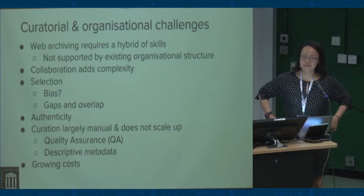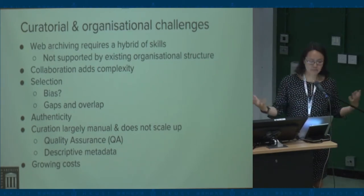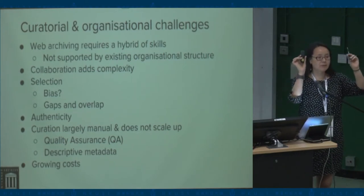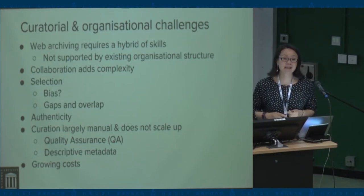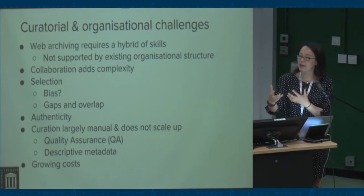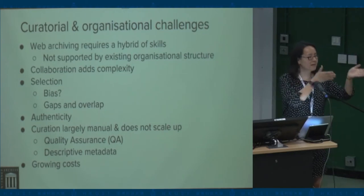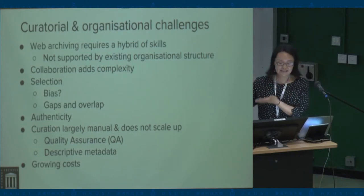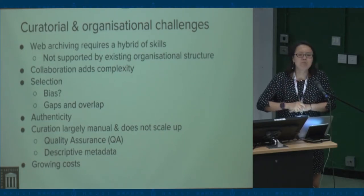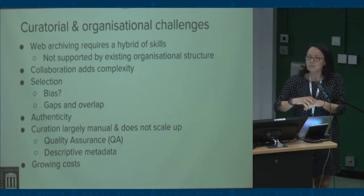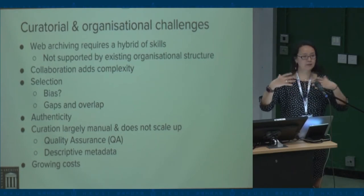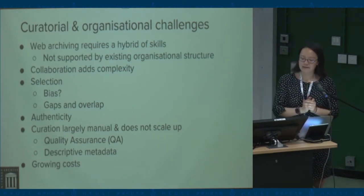When it comes to selective archiving, to select something you need knowledge of the pool you are selecting from. Because the web is so vast, quite often we don't explicitly know why something is selected and archived and why something isn't. And how about gaps and overlap? Someone might say don't worry about government websites — they are the most extensively archived portion of the web. But what websites are not archived by anyone? Services like Memento can help in finding these gaps and overlaps.